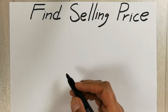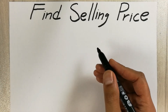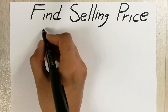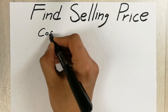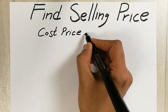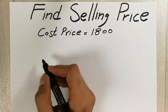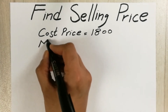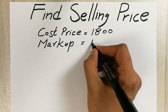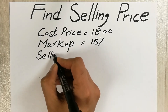Hello guys, I hope you are doing really well. In today's video I will show you how to find out the selling price. For example, you have an item and the cost price of that item is 1800 dollars, or rupees, or whatever currency. We also have the markup — let's say 15 percent.